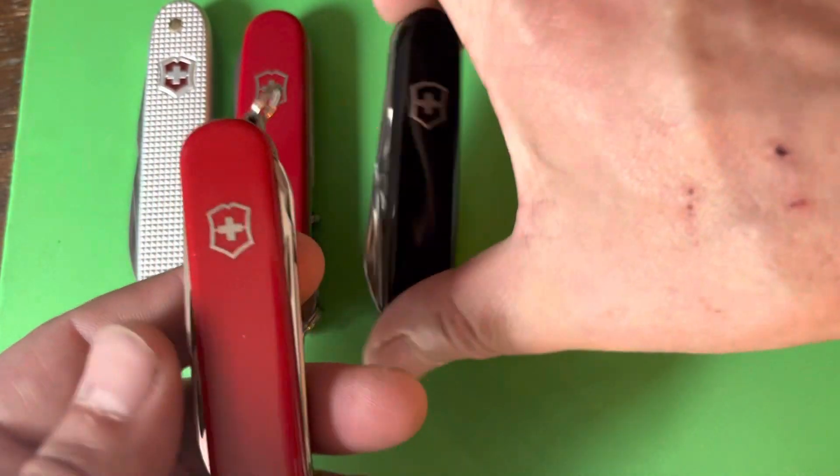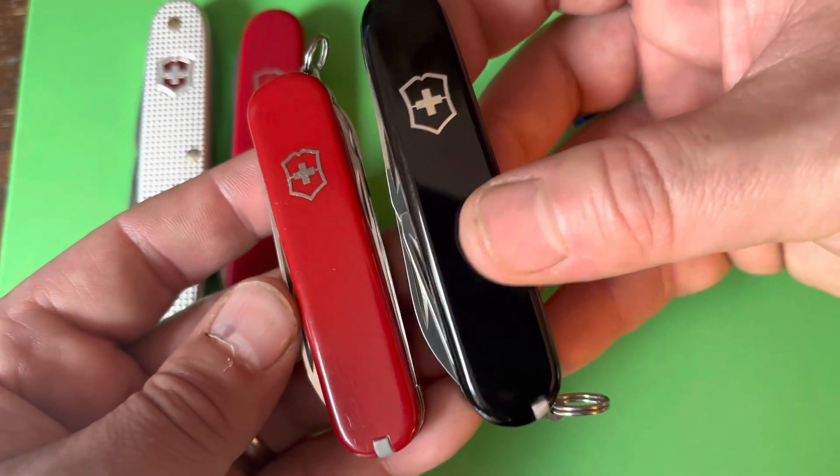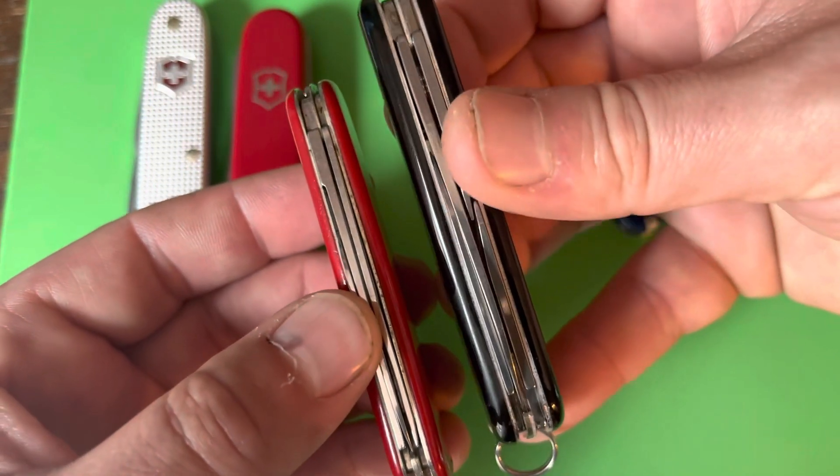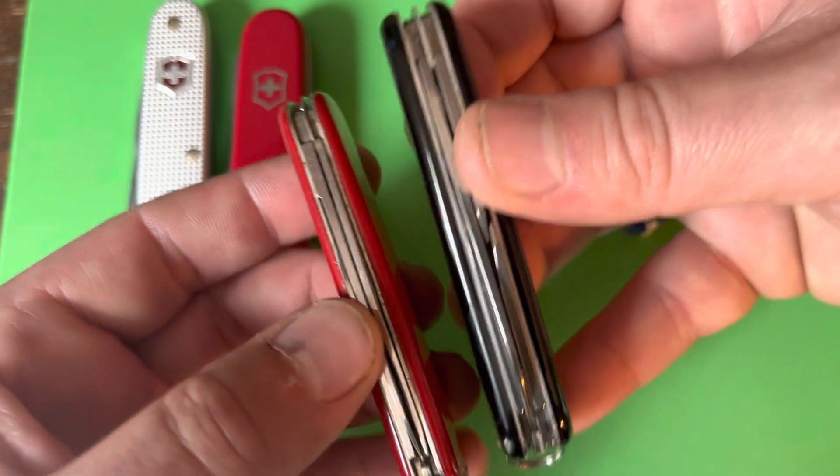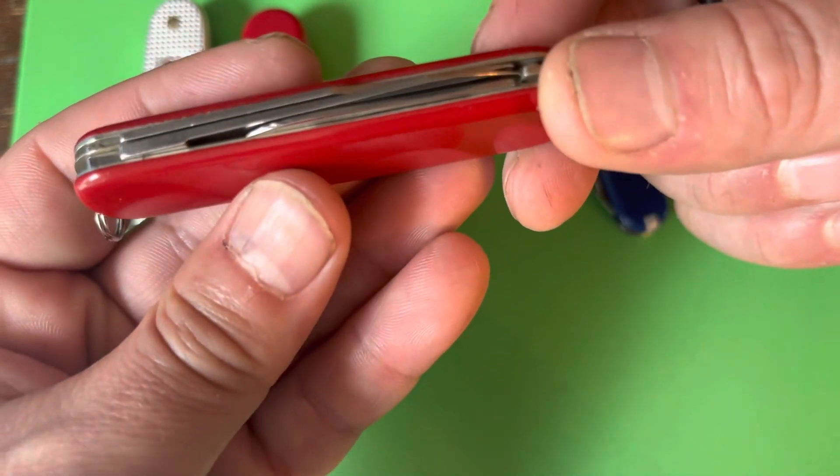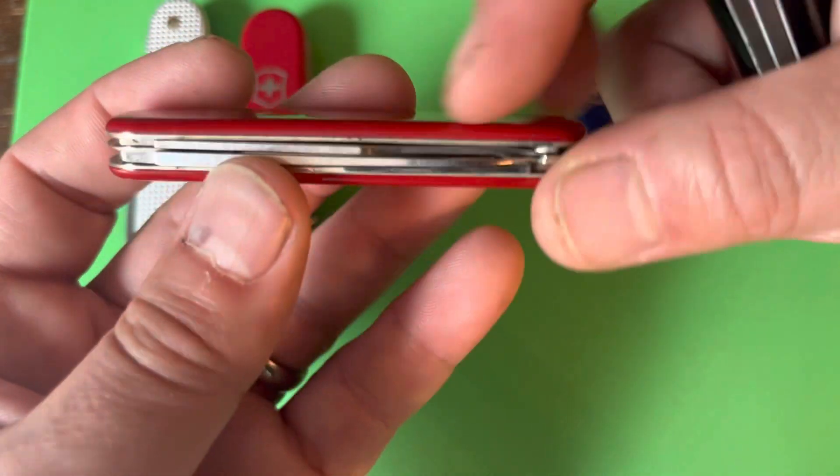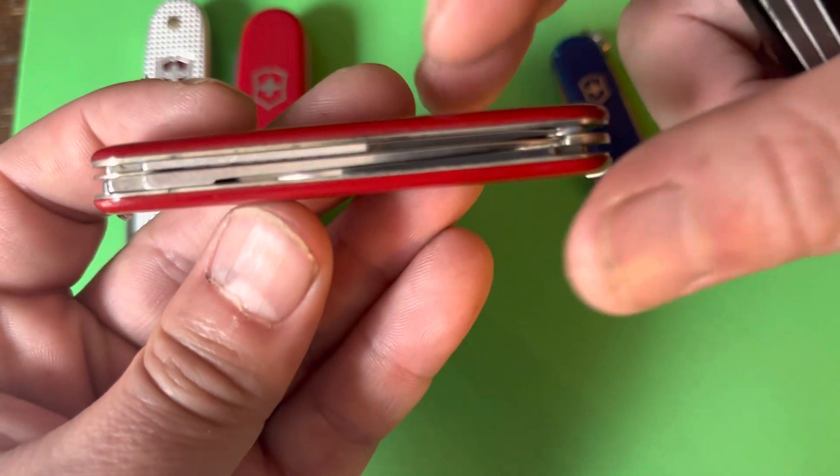They just make really nice compact carries. When you go up to the 84, it starts to get thicker. This is a two-layer Swiss Army knife - actually, would this be considered a three-layer? I think this would be considered a two-layer even though there's three tools here.